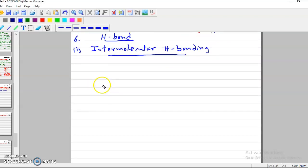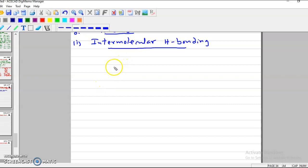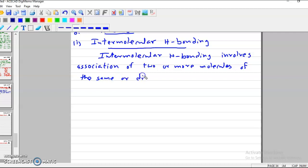Intermolecular hydrogen bonds appear when two different molecules come closer. Intermolecular hydrogen bonding involves association of two or more molecules. Intermolecular hydrogen bonds are of the same kind or different compounds.